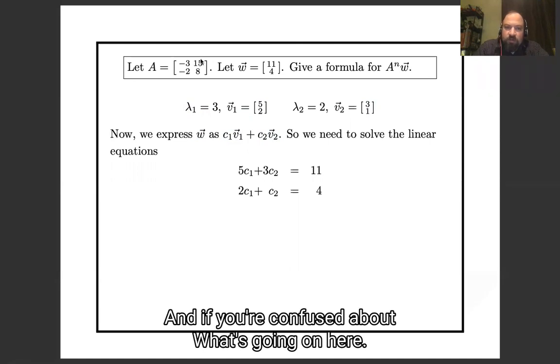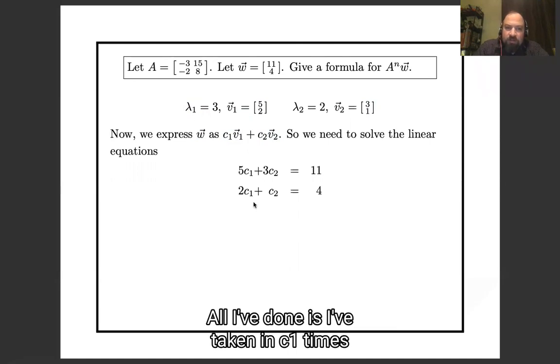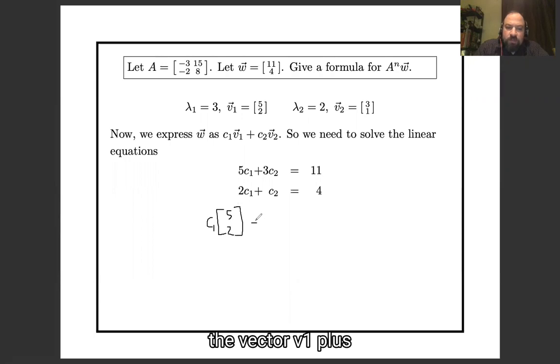And if you're a little confused about what's going on here, all I've done is I have taken c₁ times the vector v₁ plus c₂ times the vector v₂ equals w, which is [11, 4]. And I've written out component by component.